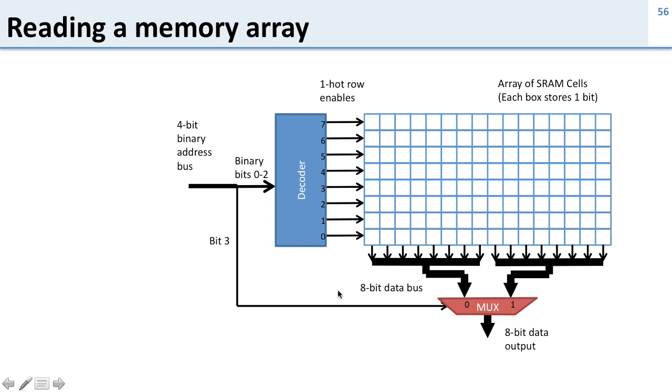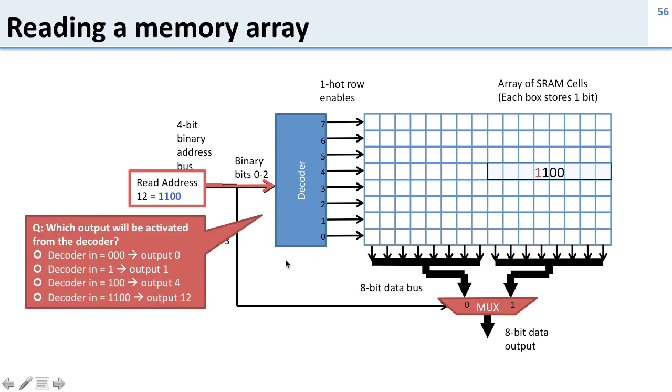So let's take a look at an example of how we read out of the memory array. Say I want to read this entry right here 1100 or address 12. How would I go about reading that address? Well I have a binary input here 12 which is 1100 which is going to go into my RAM and I want to read out that value.